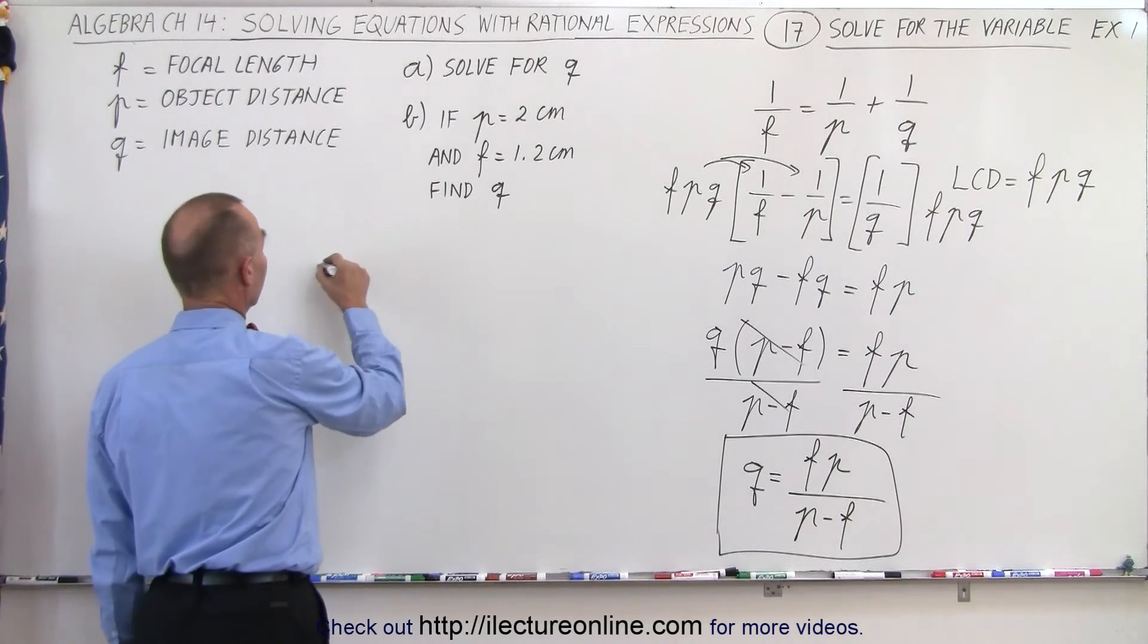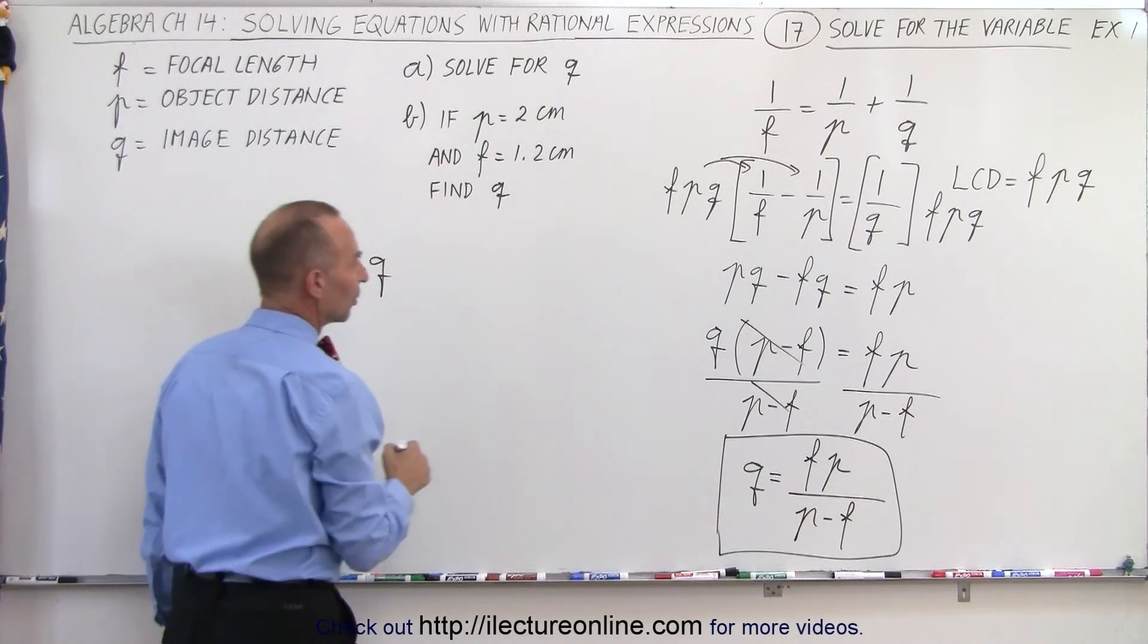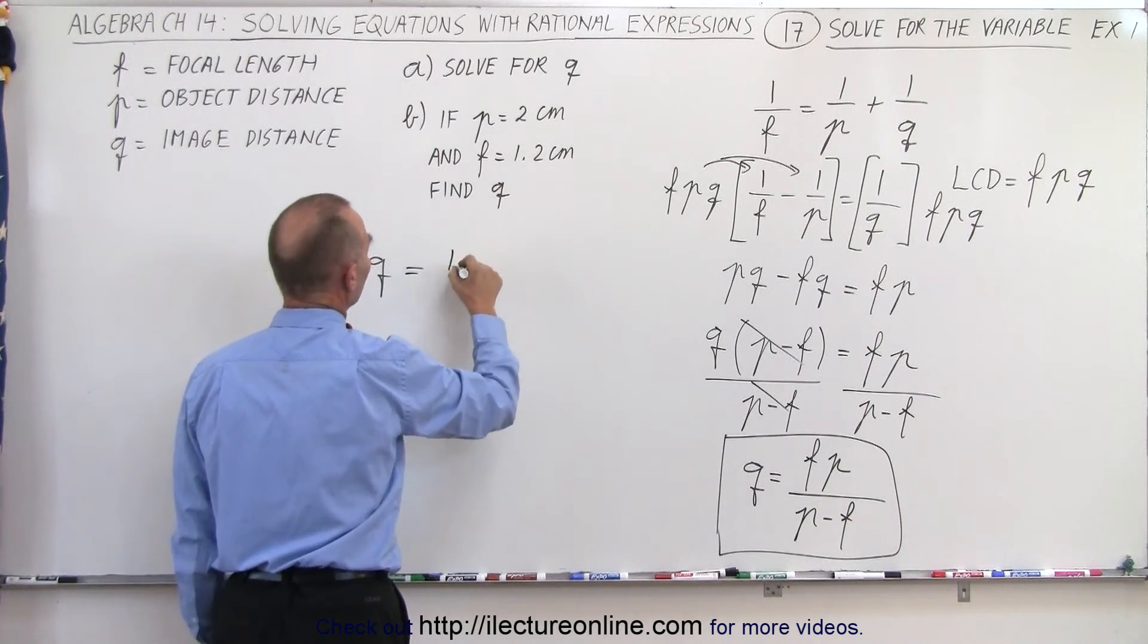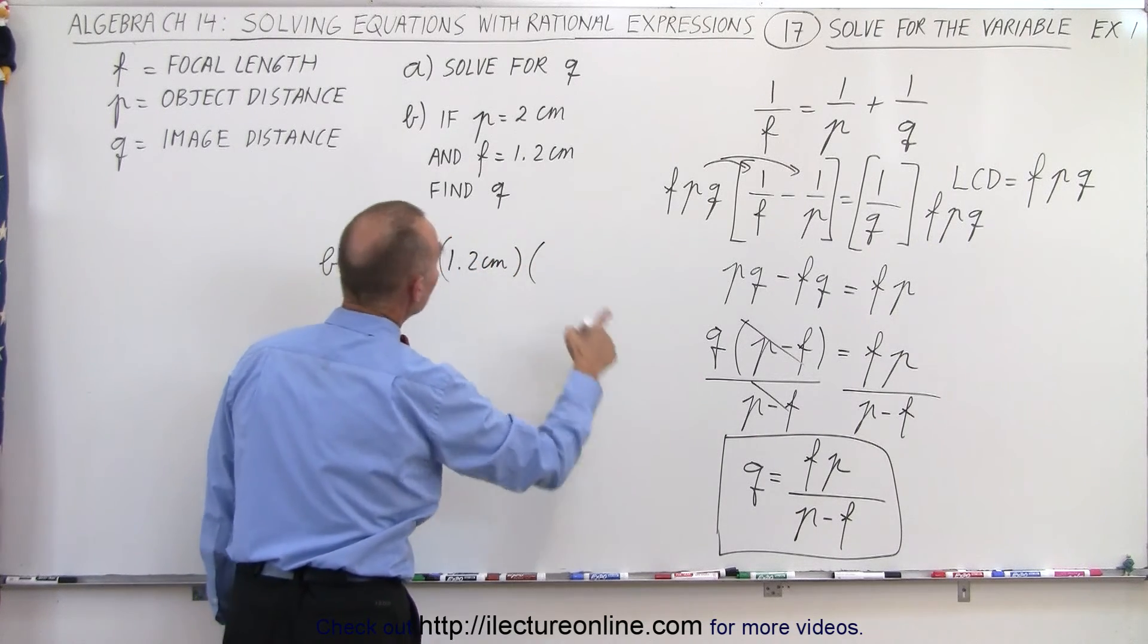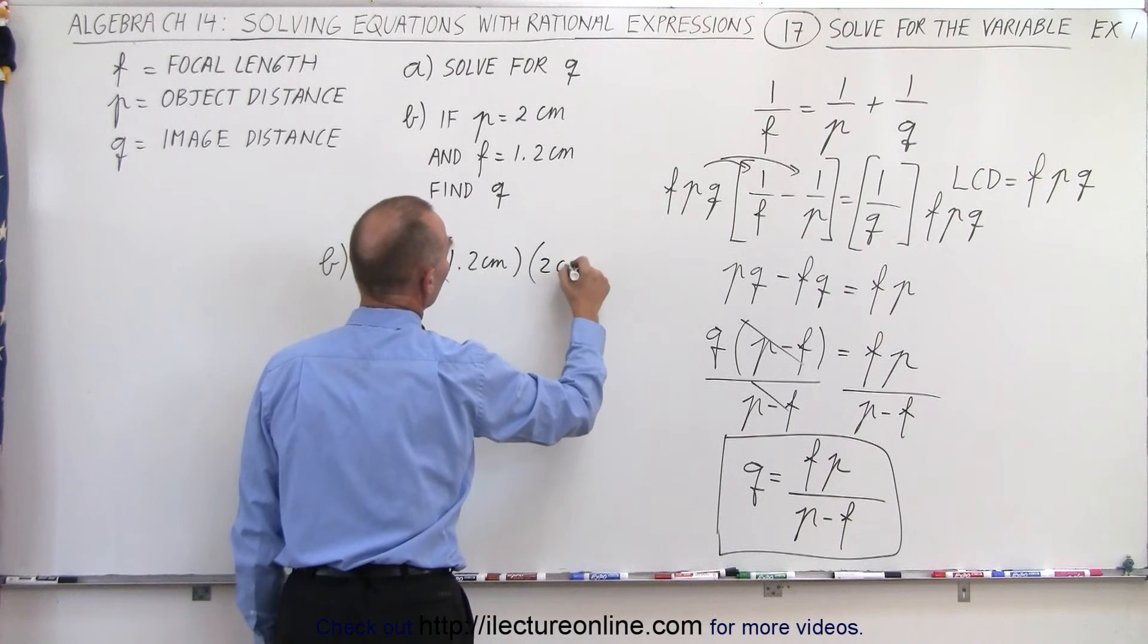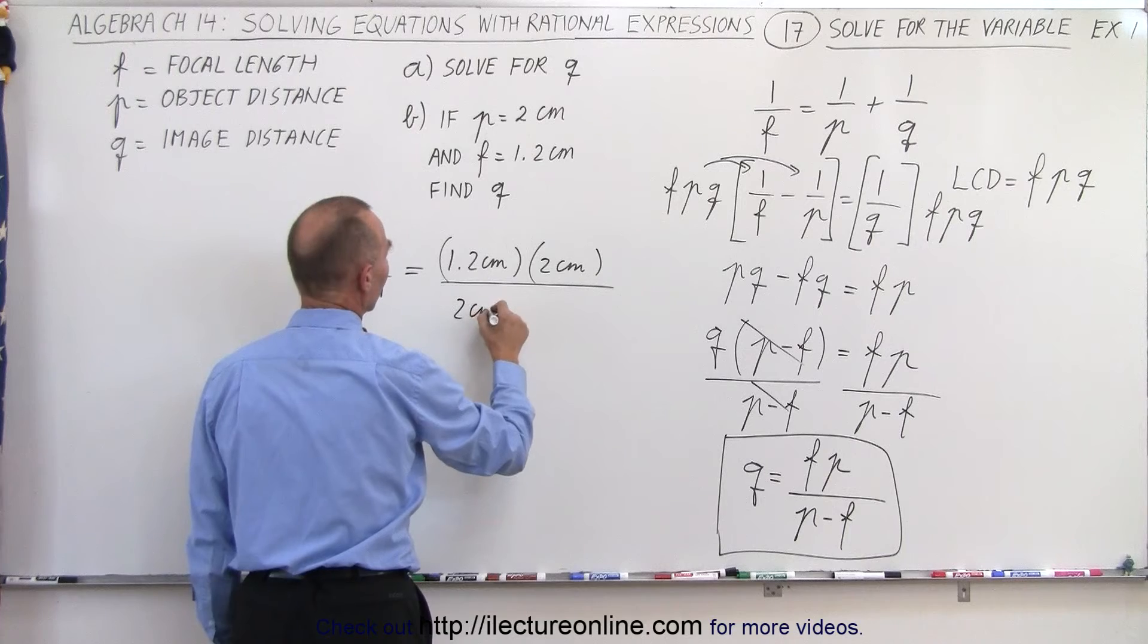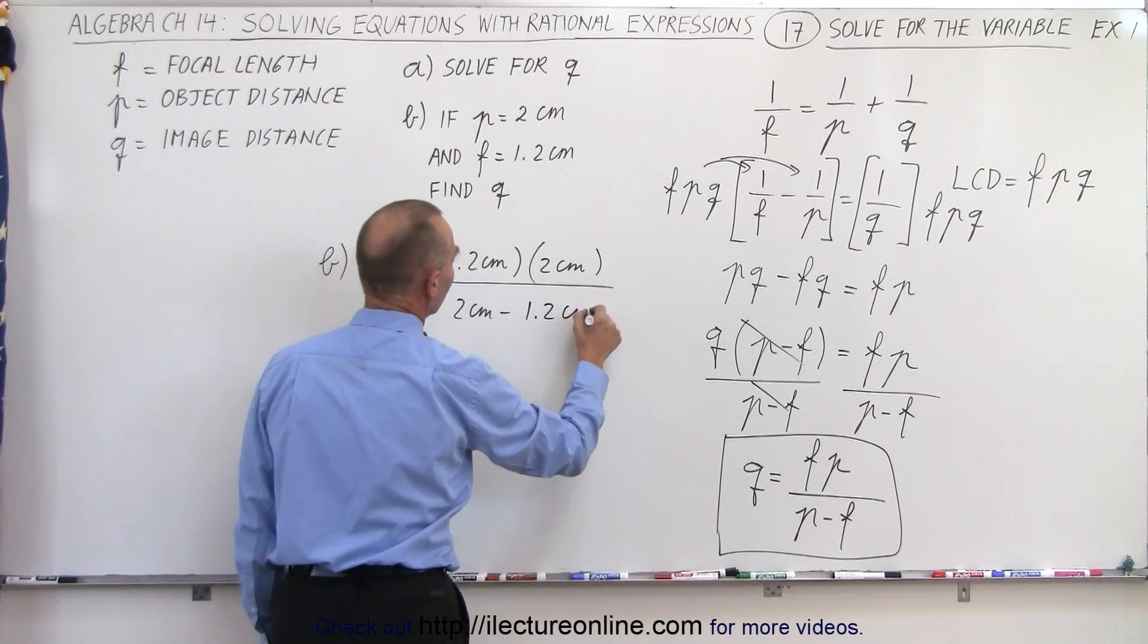The next thing we're going to do for part B is find Q when we're given these values. So, Q is equal to the focal length, which is 1.2 centimeters, multiplied times P, which is the object distance, 2 centimeters, all divided by P, which is 2 centimeters, minus F, which is 1.2 centimeters.